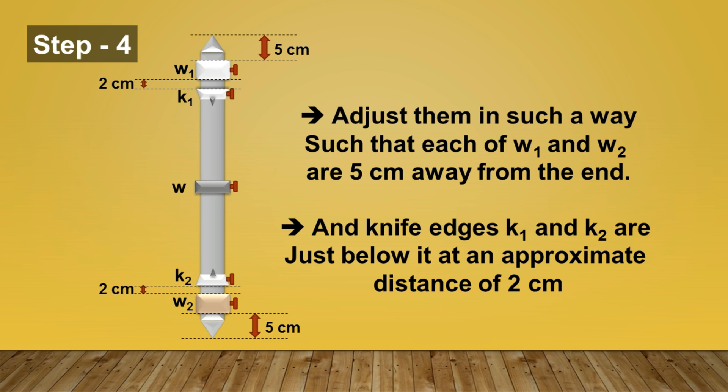Now we have moved to step 4. Adjust W1 and W2 in such a way that each of it is 5 cm away from the end. After that, the knife edge K1 and K2 are just below it at an approximate difference of 2 cm. This is the first arrangement with which you can start this experiment.